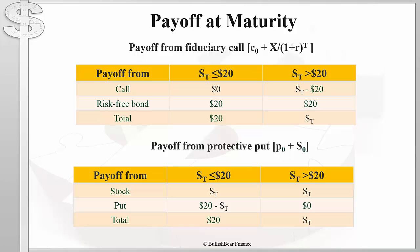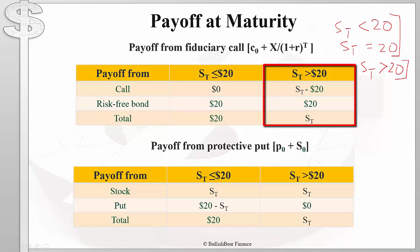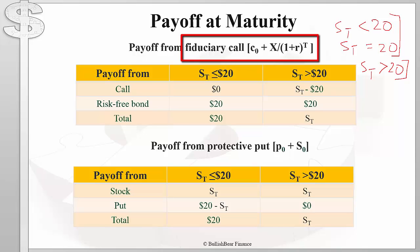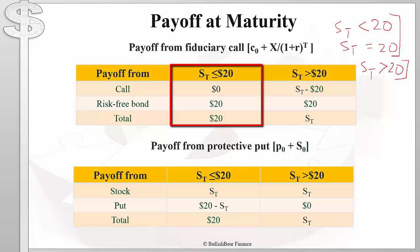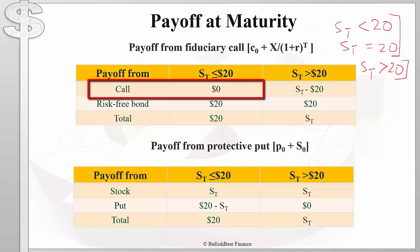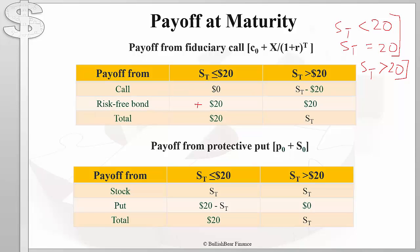When the options expire, there are only three possibilities: the stock price is less than $20, equal to $20, or more than $20. Starting with the scenario where the stock price is less than or equal to $20: our call option expires worthless, the risk-free bond gives us $20, and therefore our total inflow is $20.